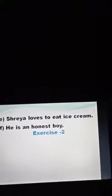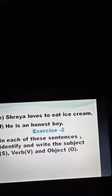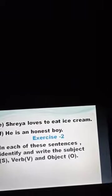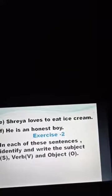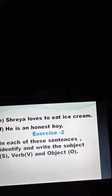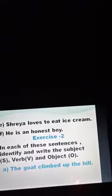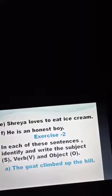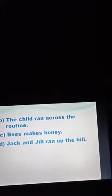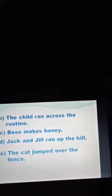Exercise 2 is also there. In each of the sentences, identify and write S for subject, V for verb, and O for object. The first sentence in the series is 'The goat climbed up the hill.' Next: 'The cat jumped over the fence.'